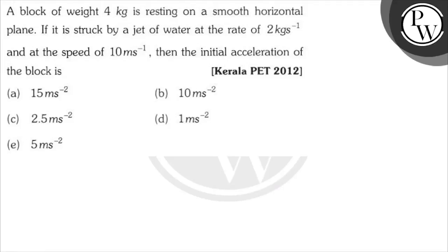Let's see the question: a block of mass 4 kilogram resting on a smooth horizontal plane is struck by a jet of water at the rate of 2 kilogram per second and speed of 10 meter per second. The initial acceleration of the block is — so the force from the water stream is equal to what?